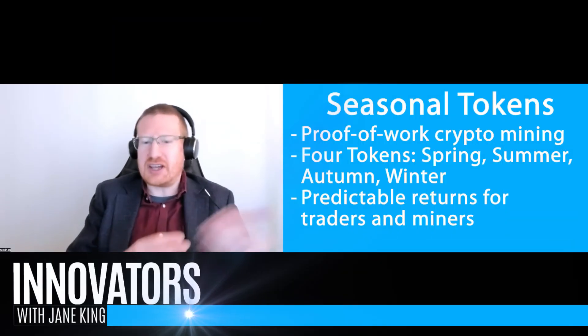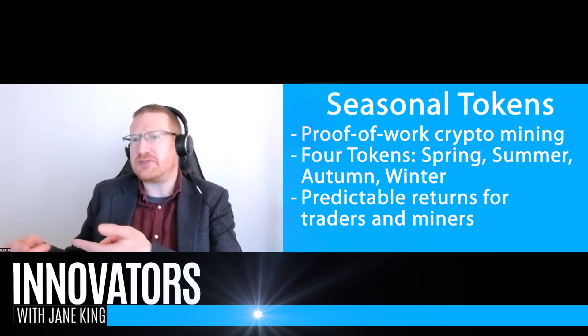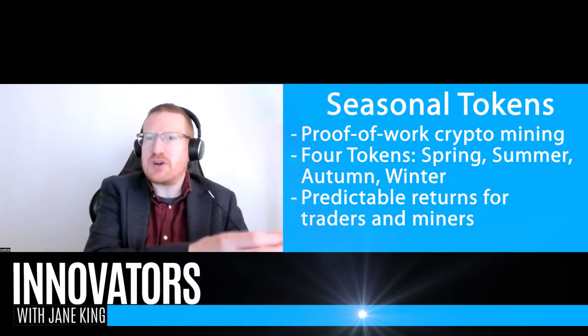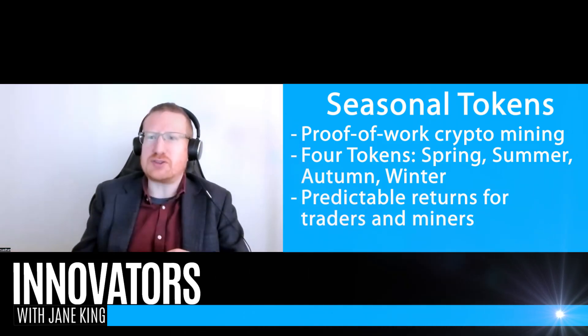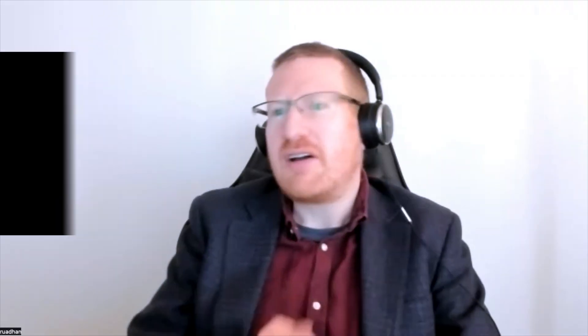So before we wrap up, just explain seasonal tokens for people who maybe haven't seen a previous interview. So there are four tokens produced by Proof of Work mining, designed so that their prices will cycle around each other slowly over the course of years. Investors can hold whichever one is going to become the most expensive, and once it does, they can trade it for a cheaper one — and by doing that they get more tokens in total. If you trade three summer tokens for five spring tokens, you have more tokens after the trade. As long as you always trade tokens for more tokens of a different type, the total number in your investment increases every time you trade, and the oscillating prices ensure there are always more opportunities to do that again in the future.